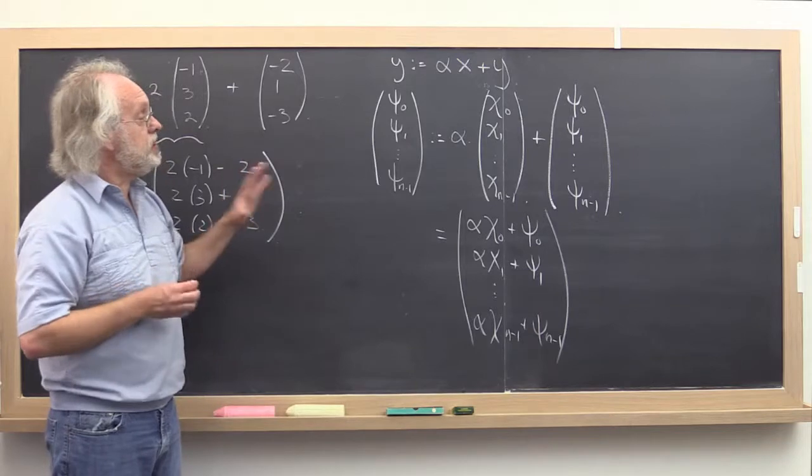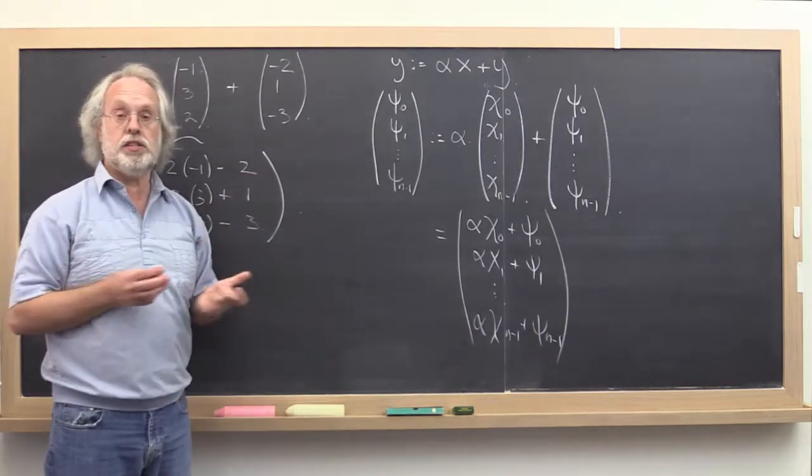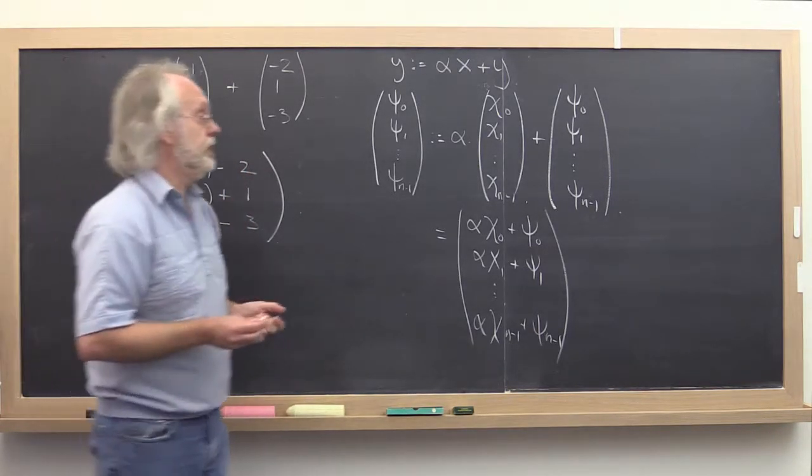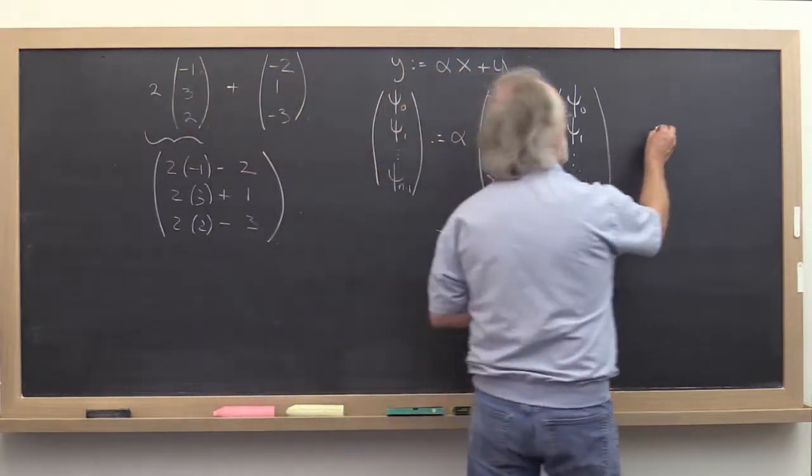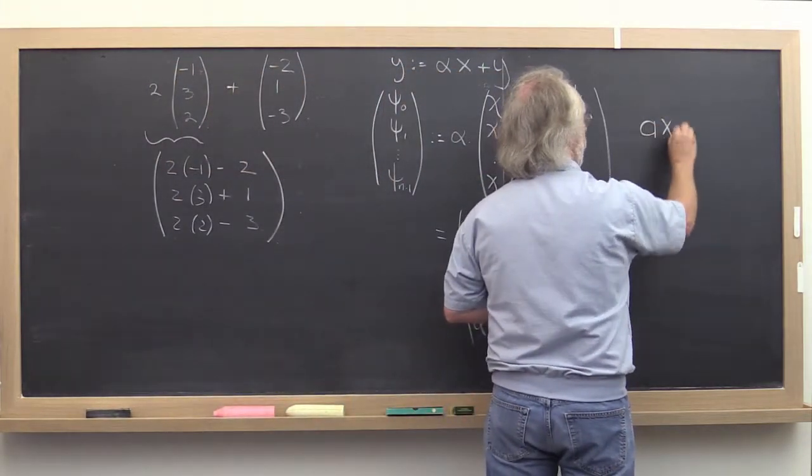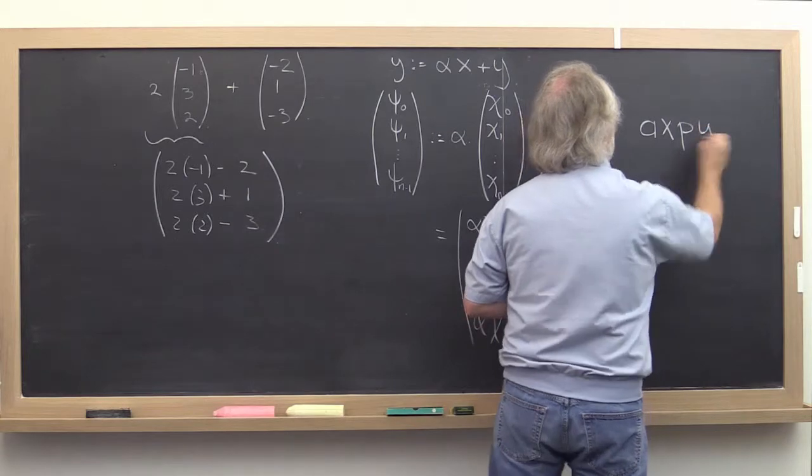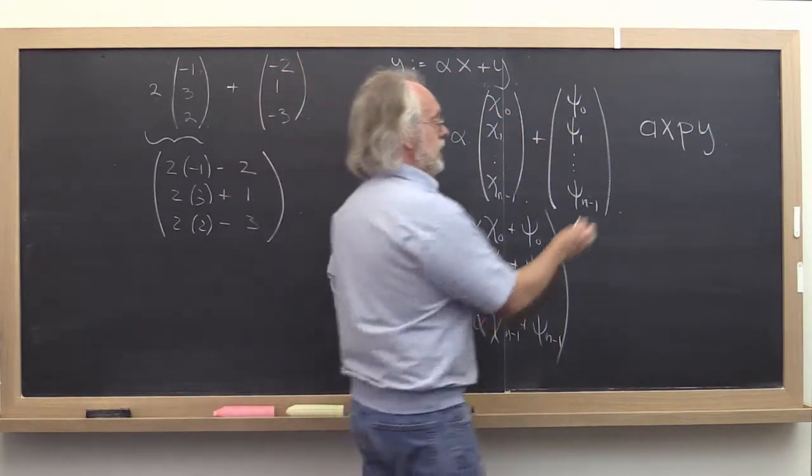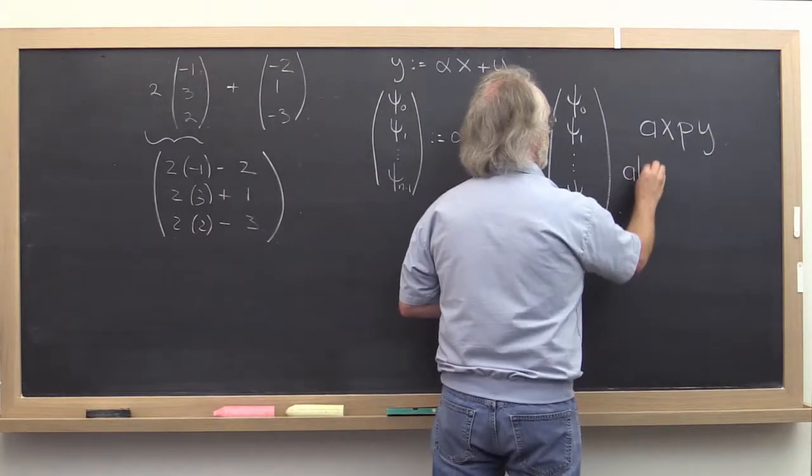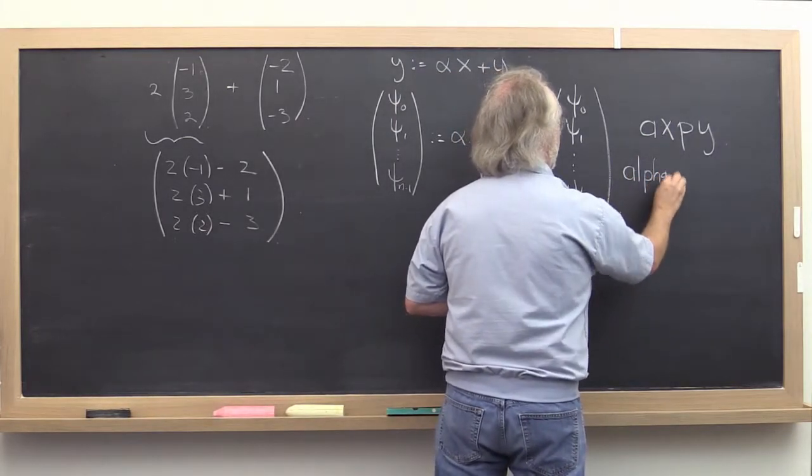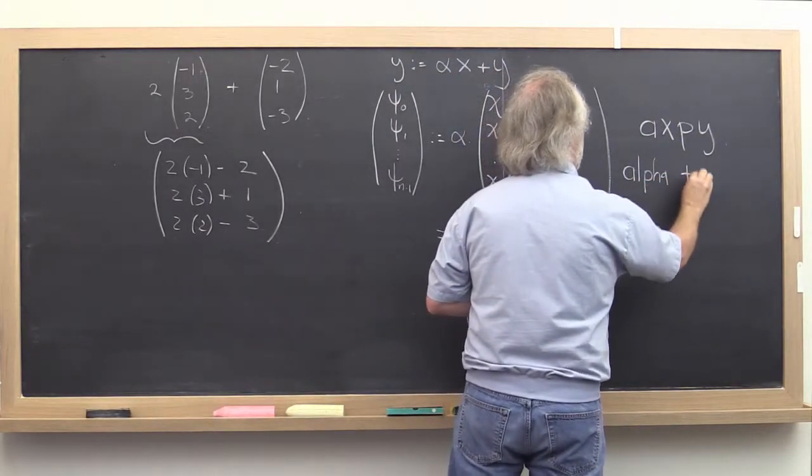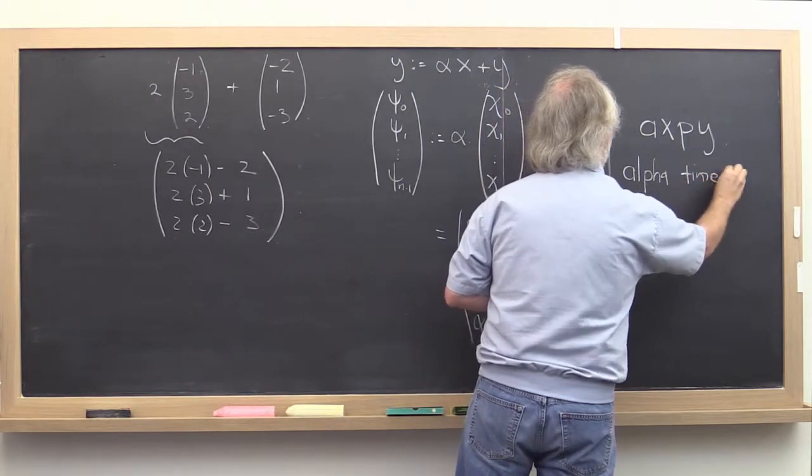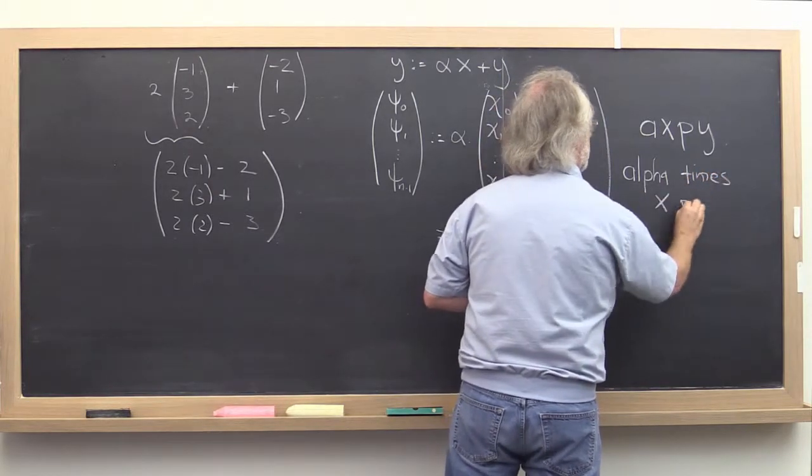Now this particular operation is so important in linear algebra that it has a special name. And the special name it has is Axpy. Now where does Axpy come from? Axpy comes from alpha times X plus Y.